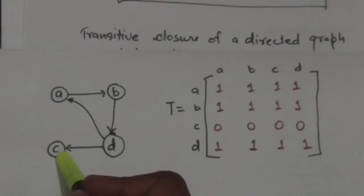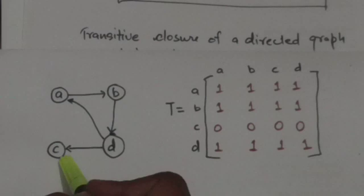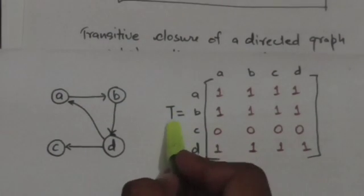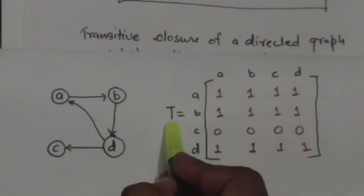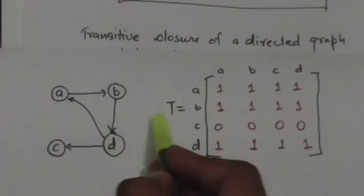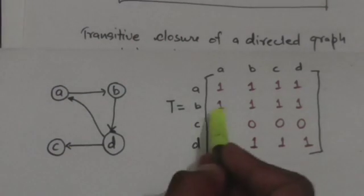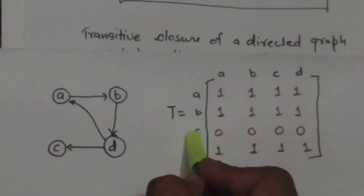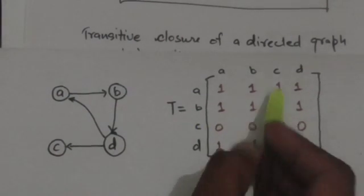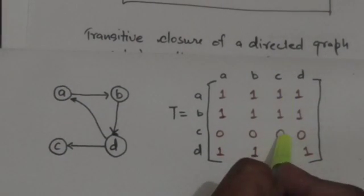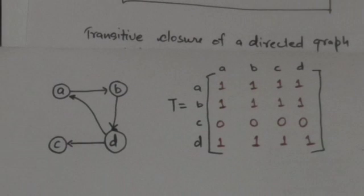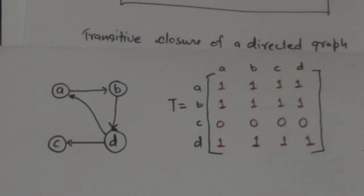There is no path from vertex C to vertex C in this directed graph, therefore in matrix T, which is the transitive closure of this graph, the element at the cth row and cth column is 0.